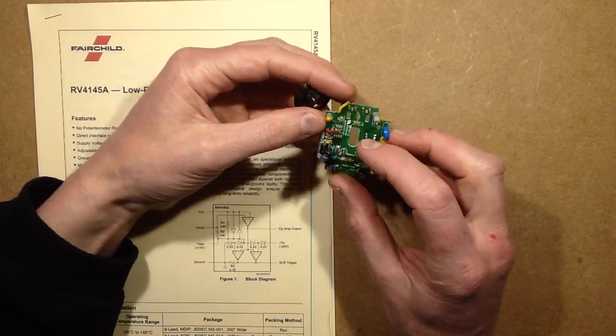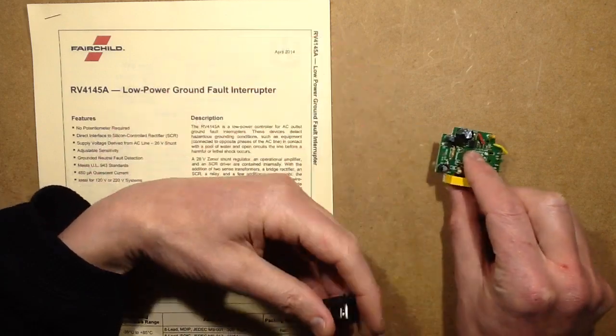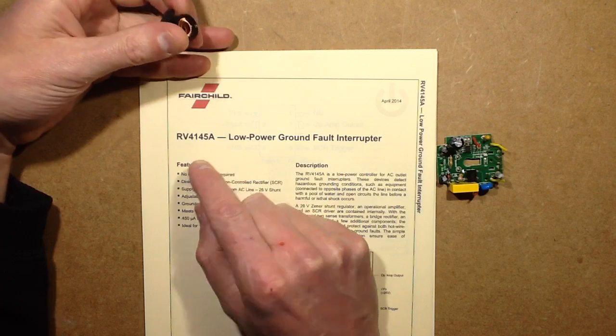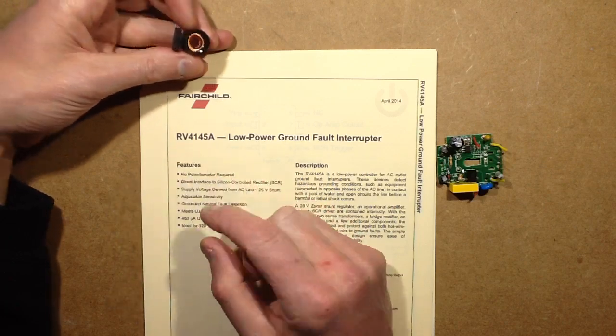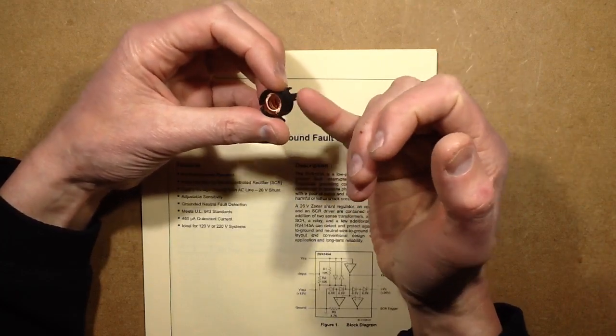There's a surprise, and as suspected it's based around a single chip which is dedicated to the task and it's made by Fairchild and it's called an RV4145A. You'll find the data sheet for that online and what's intriguing is that someone else asked about how it detects neutral to earth faults.